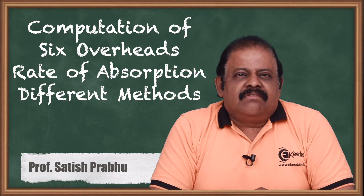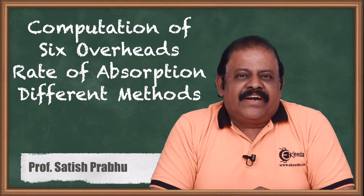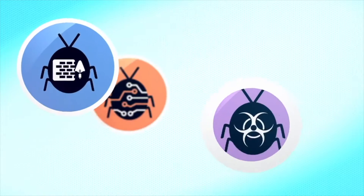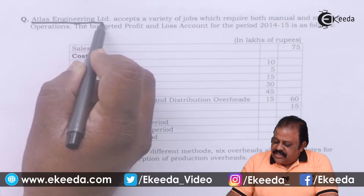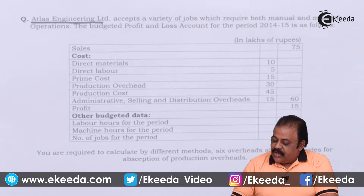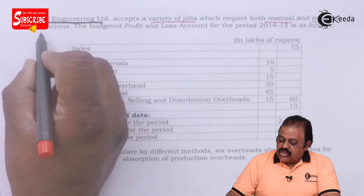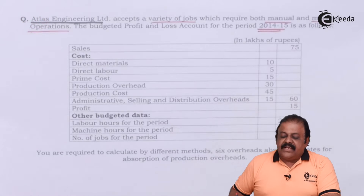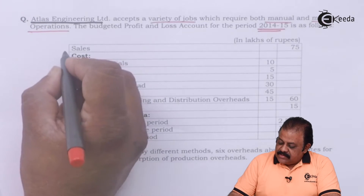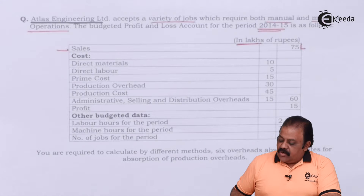We will discuss one question where we have annual data information for one financial year relating to overheads, and we are required to calculate different types of overhead rates. Atlas Engineering Limited accepts a variety of jobs which require both manual and machine operations. The budgeted profit and loss account for the period 2014-15 is as follows: sales 75 lakhs, direct material cost 10 lakhs.